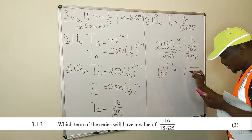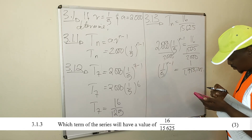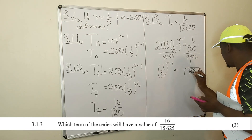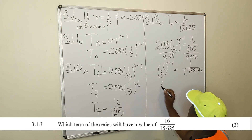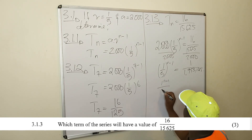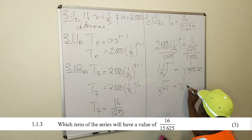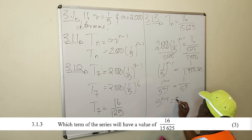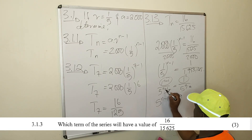Working out 16 over 15,625 divided by 2000 gives us 1 over 1,953,125. We identify the factors and find that this equals 1 over 5⁹. So (1/5)^(n−1) = (1/5)⁹. This top part equals this top part, and this bottom part equals this bottom part, so 5^(n−1) = 5⁹.